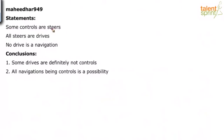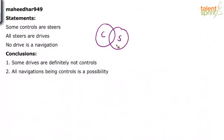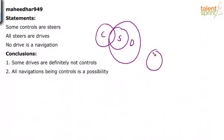Some controls are steers — controls here and steers here. All steers are drives. And no drive is a navigation. So drive and navigation will not cross each other.